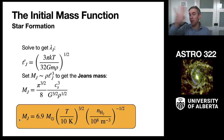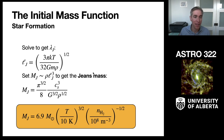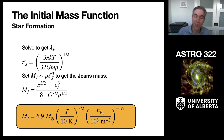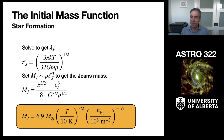A small pedantic note: 'Jeans' has no apostrophe — the person who derived this was named Jeans, so 'Jeans mass' is correct as written. Anyway, this tells us the characteristic scale of objects that are going to collapse is about 7 solar masses. So star formation should produce objects with a characteristic scale of around 7 solar masses.